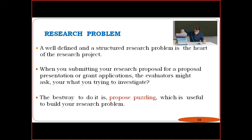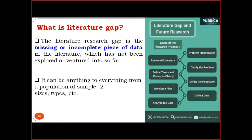The next question in a research proposal is: how will this research benefit the general or local people? Your research should be generalized — applicable across the entire world so general people can benefit. To build the research problem, a puzzling proposition helps construct it. For this, we need to go for a literature review, which helps identify the literature gap.